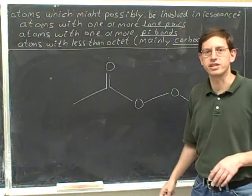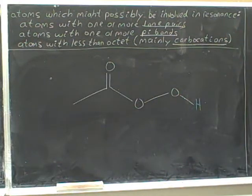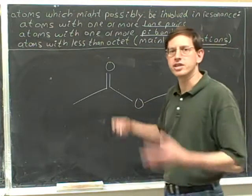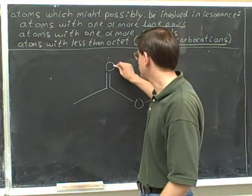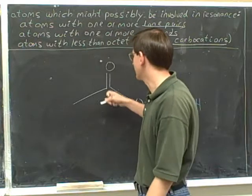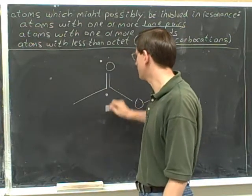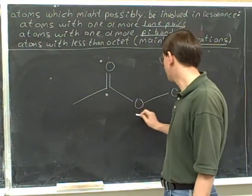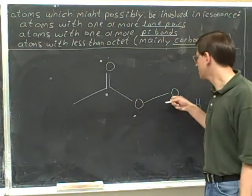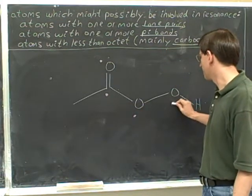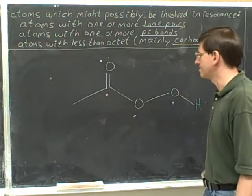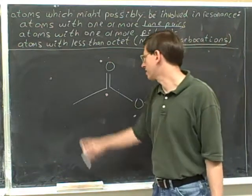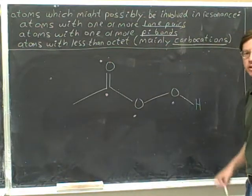Identify the candidates for resonance here. This oxygen has a pi bond, so I'll put a dot here. This carbon has a pi bond, so I'll put a dot here. This oxygen has a lone pair, so I'll put a dot here. And this oxygen also has a lone pair, so I'll put a dot on the oxygen — certainly not on the hydrogen and not on this carbon. So we've got four dots.